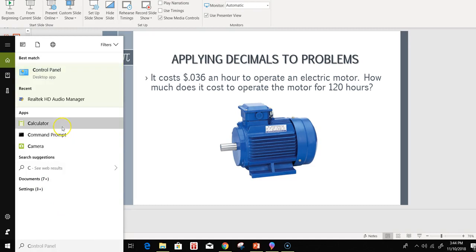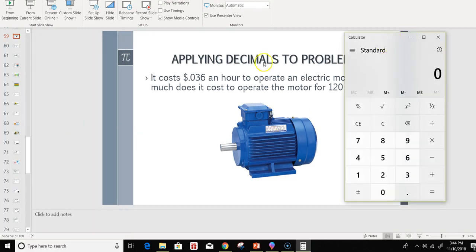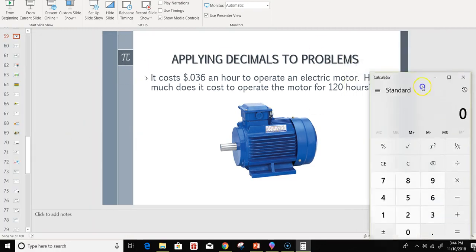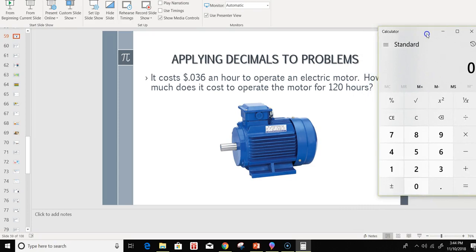I'm going to put my calculator up, and of course, we know this is a multiplication problem. So, 0.036 times 120, 120 hours will cost $4.32.